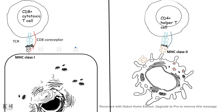MHC class 2 molecules display pathogen-derived antigens and present them to CD4-positive helper T cells, leading to activation of T helper cells, which in turn allows activation of B cells and production of antibodies against that specific antigen.